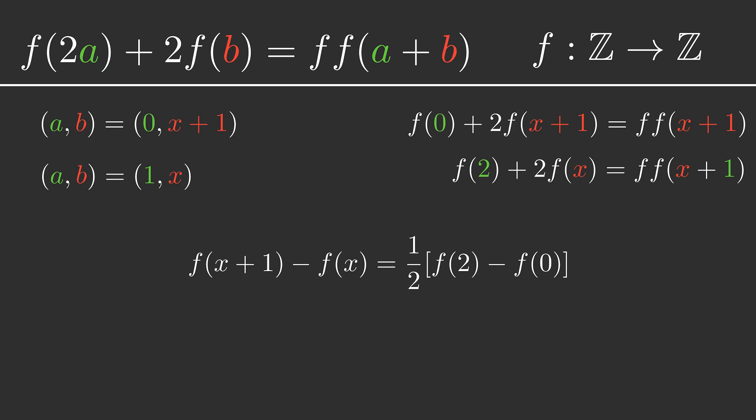f of 2 and f of 0 are both constants, i.e. they don't change, so when we find the difference between them and then divide by 2, that is also a constant. This is really important because it tells us the left hand side is also a constant.